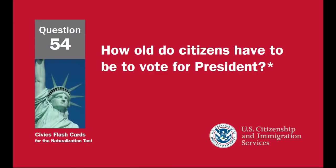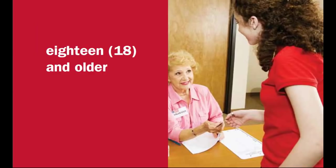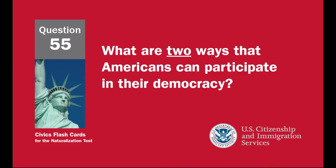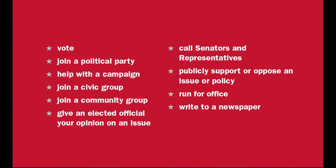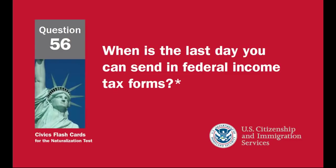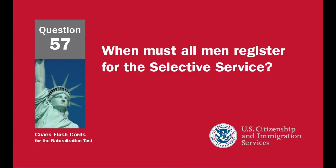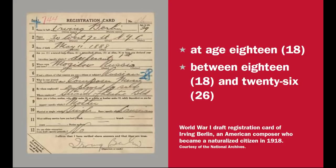How old do citizens have to be to vote for president? Eighteen and older. What are two ways that Americans can participate in their democracy? Vote, join a political party, help with a campaign, join a civic group, join a community group, give an elected official your opinion on an issue, call senators and representatives, publicly support or oppose an issue or policy, run for office, write to a newspaper. When is the last day you can send in federal income tax forms? April 15th. When must all men register for the Selective Service? At age 18, or between 18 and 26.